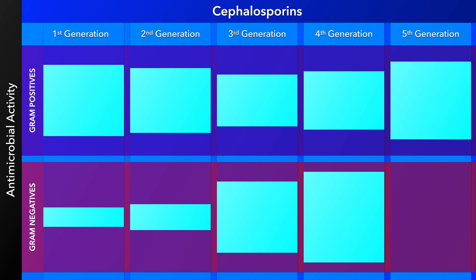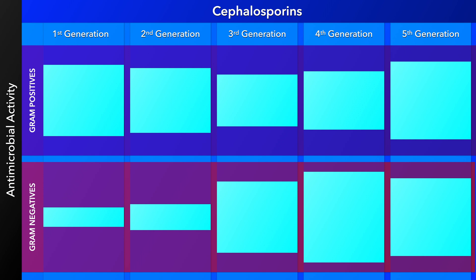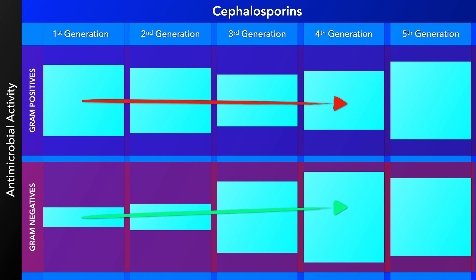The fifth generation has the most gram-positive coverage, including activity against methicillin-resistant staphylococcus aureus, while still being very effective against gram-negatives, albeit not against Pseudomonas. So very generally speaking, the first generation has wide gram-positive coverage, slightly better than the second and third generations, while later generations increase gram-negative coverage.